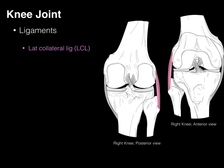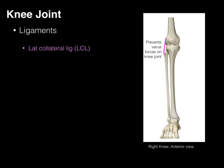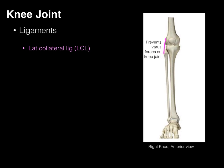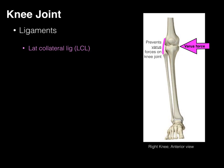Our two collateral ligaments: the lateral collateral ligament arises from the lateral epicondyle of the femur and goes to the head of the fibula. The medial collateral ligament comes from the medial epicondyle of the femur and goes to the medial proximal tibia. The lateral collateral ligament prevents varus forces on the knee joint — that is, lateral bending of the knee toward the outside — helping to prevent that lateral bending when a varus force is applied.